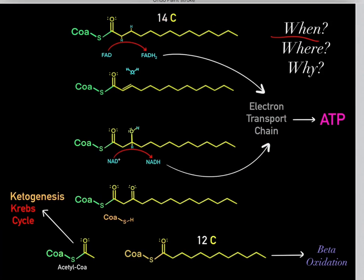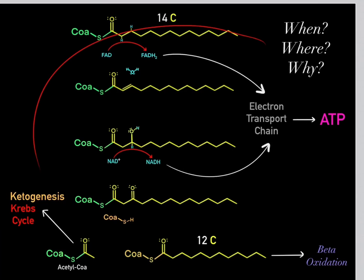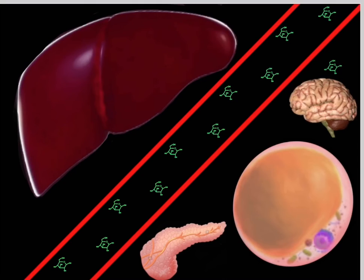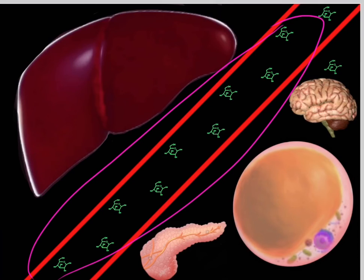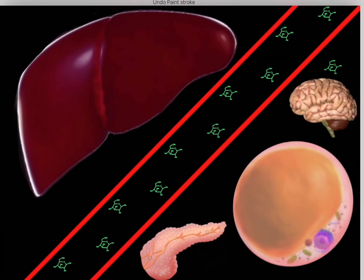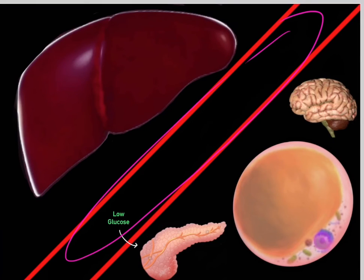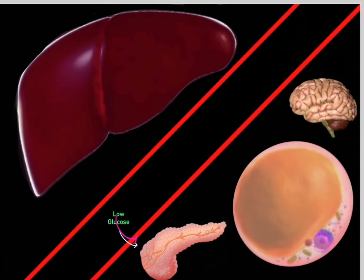When and why does our body do beta-oxidation? It is extremely important to maintain enough glucose in the bloodstream because the brain requires glucose as its source of energy and obtains it from the blood. However, if you don't eat for a couple of days, blood glucose levels drop, meaning the brain no longer has an adequate source of glucose.